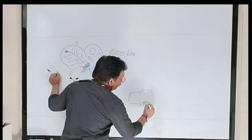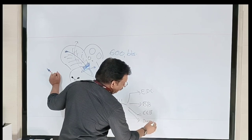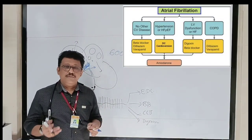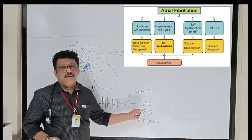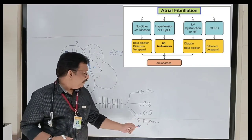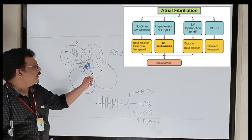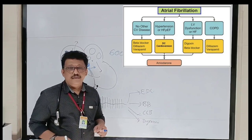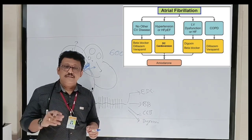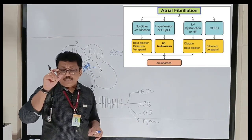Three important drugs: beta blockers — ideally metoprolol in the emergency room — calcium channel blockers like diltiazem or verapamil, and digoxin. Beta blockers and calcium channel blockers cannot be used in cardiac failure or left ventricular failure with atrial fibrillation — they are relatively contraindicated there. In that case you have to use digoxin, which can improve cardiac pumping and also control the rate. Digoxin is the drug to use in atrial fibrillation with heart failure.